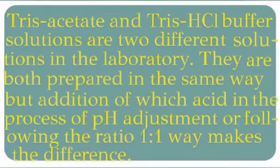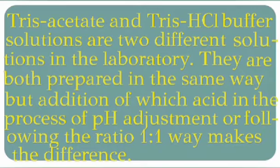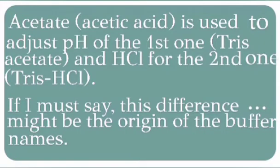Tris-acetate and Tris-HCl buffer solutions are two different buffer solutions in the laboratory. They are both prepared in the same way, but the addition of which acid in the process of pH adjustment — or following the ratio one-to-one preparation method — makes the difference.